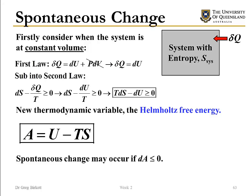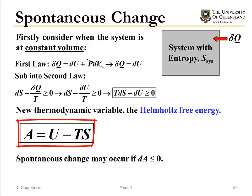For a constant volume system, we can use the first law and say that this heat addition is simply equal to dU. If we substitute this into the second law we get a new expression: T dS minus dU has to be greater than zero. This gives us a new thermodynamic variable, the Helmholtz free energy, which is equal to U minus TS. So for a spontaneous change at a fixed temperature, dA has to be smaller than or equal to zero.